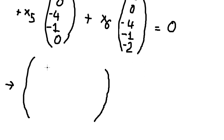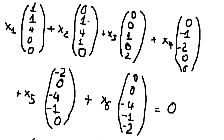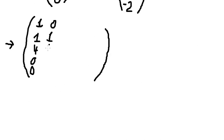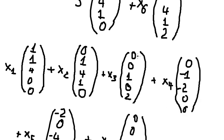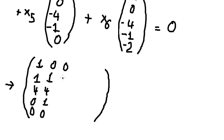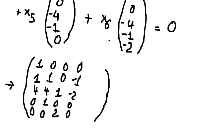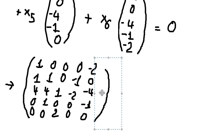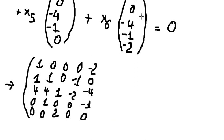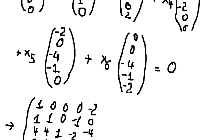We write the same: row one is 1, 1, 4, 0, 0; then 0, 1, 4, 1, 0; the next row is 0, 0, 1, 0, 2; then 0, negative 1, negative 2, 0, 0; then negative 2, 0, negative 4, negative 1, 0; and the last row is 0, 0, negative 4, negative 1, negative 2.